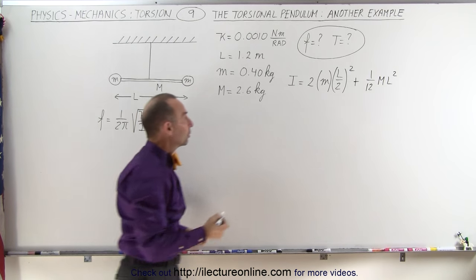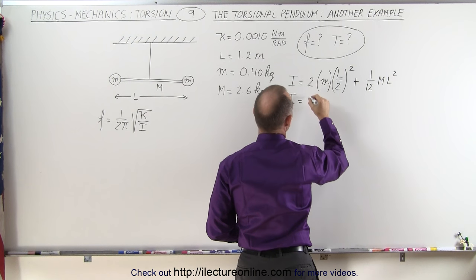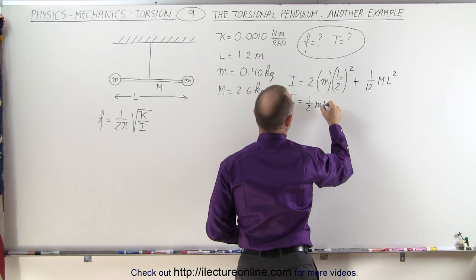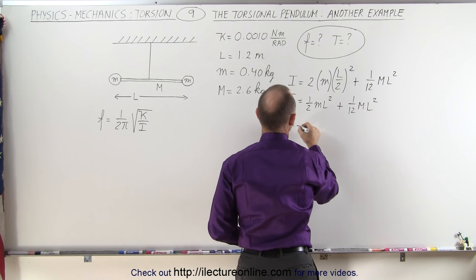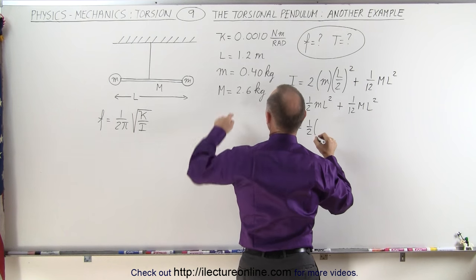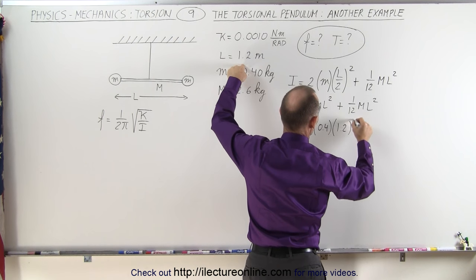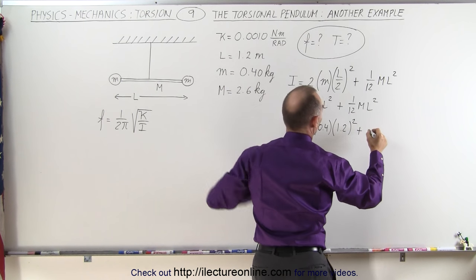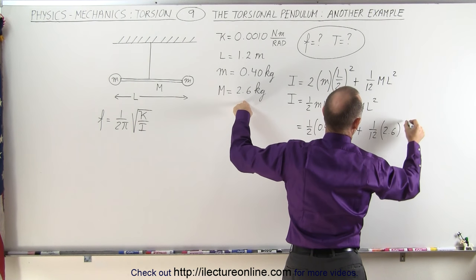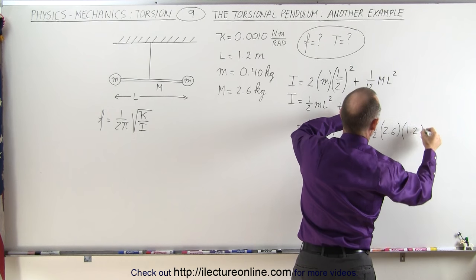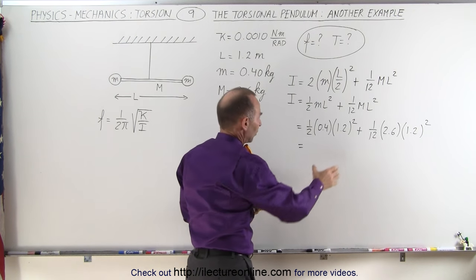Now let's find out what that's equal to. I equals 1/2 mL² plus 1/12 ML², which is equal to 1/2 times 0.4 times 1.2² plus 1/12 times 2.6 times 1.2².